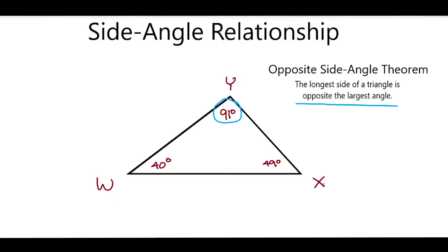So, if the angle that is the largest is 91 degrees here, and the side that's opposite to it is this side here, that would be line segment WX. And that's how you find the longest side of a triangle when you know the measures of all the angles.